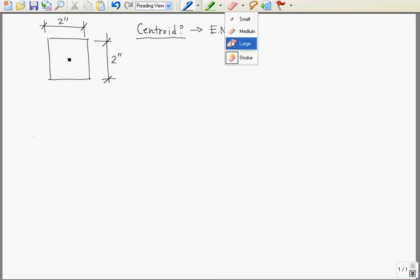So let's take a square. Let's make the length of both sides 2 inches. And we want to find out where the centroid is. If we can find the centroid, we can find the elastic neutral axis. Now, we all know intuitively that the centroid, which essentially is the center of the square, is going to be right here in the middle. But just for kicks today, we're going to actually derive it by breaking this up into areas.